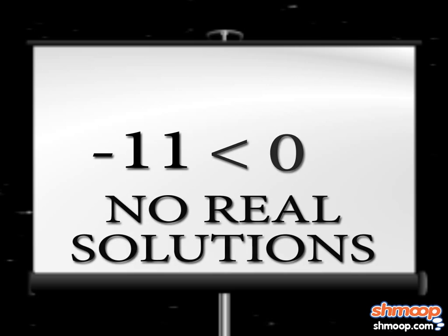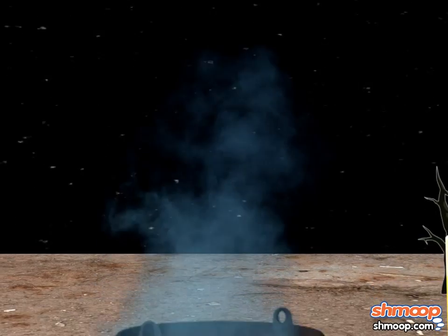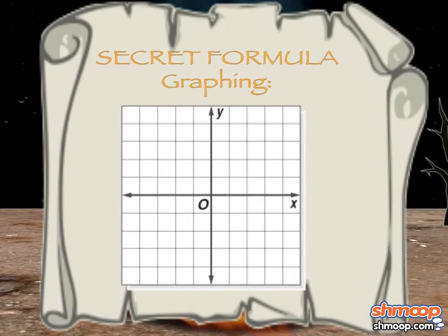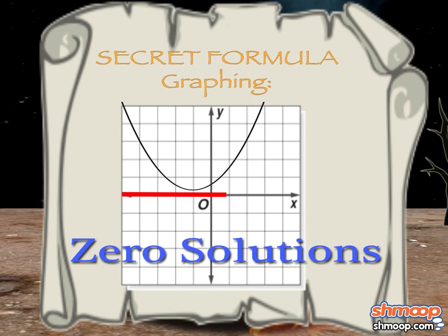So, there are no real solutions. What does no real solutions mean? Well, if we take a look at the graph, the parabola does not touch the x-axis at any x value. So, it's not real.